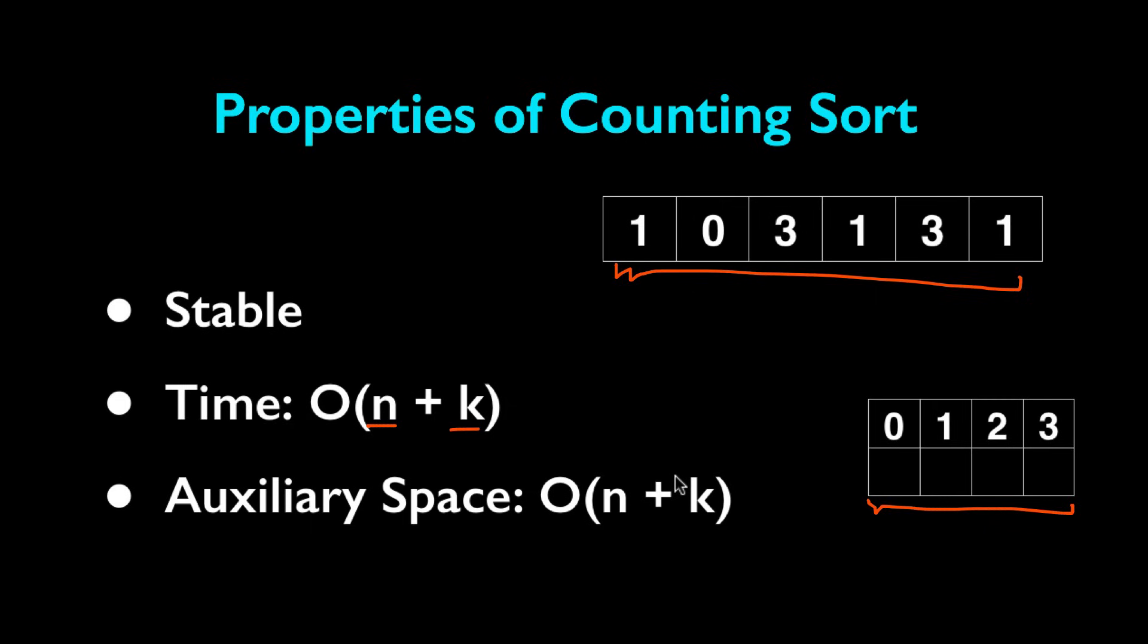Finally the auxiliary space complexity is O(n + k) for counting sort because we need to create an entirely new array with length n, the same size as the original array, as well as an array of length k to keep track of the starting index for each number.